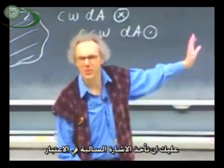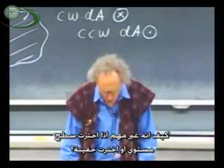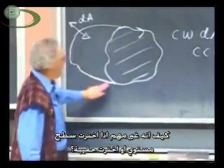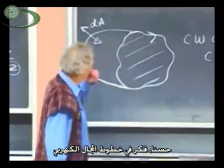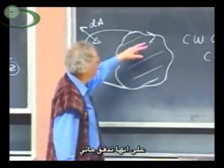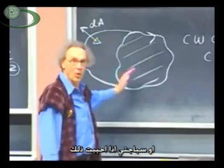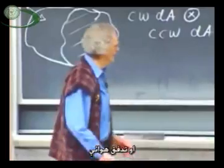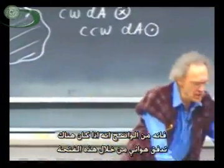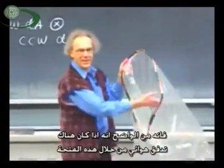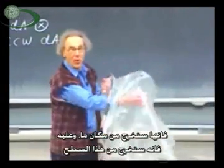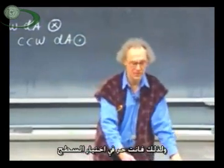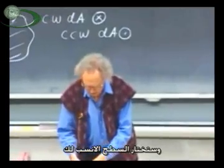You have to take that minus sign into account. How come it doesn't matter whether you choose a flat surface or whether you choose a bag? Think of magnetic field lines as a flow of water, or spaghetti, or a flow of air. It is clear that if there is some kind of a flow of air through this opening, then it's got to come out somewhere, so it always comes out of this surface. And therefore, you're really free to choose that surface — you always pick the surface that is best for you.